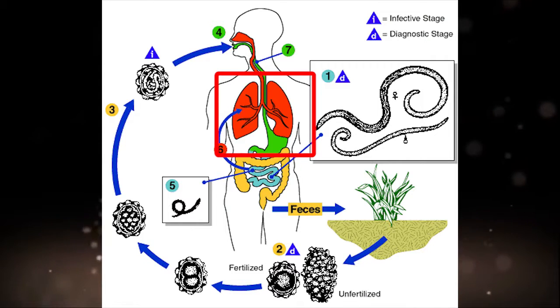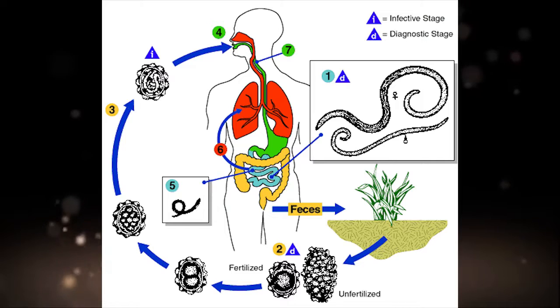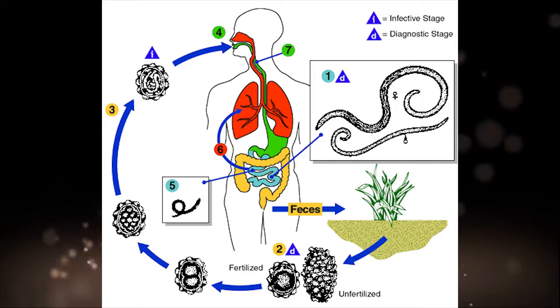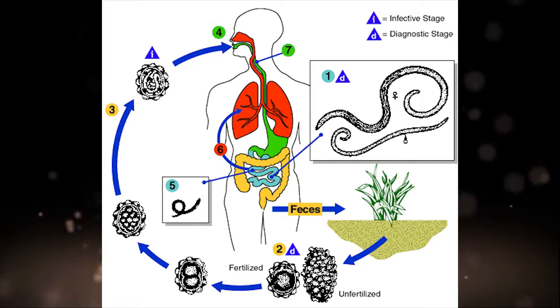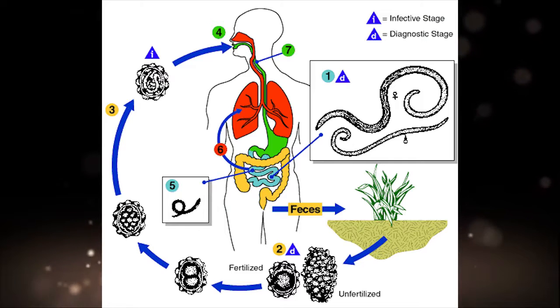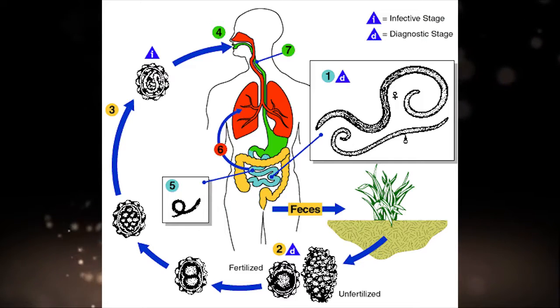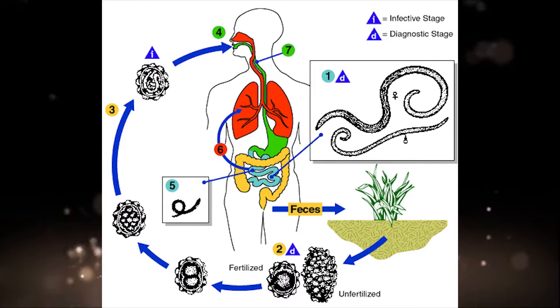They are carried via the portal and systemic circulation to the lungs. The larvae mature further in the lungs, penetrate the alveolar walls, ascend the bronchial tree to the throat, and are swallowed upon reaching the small intestine.